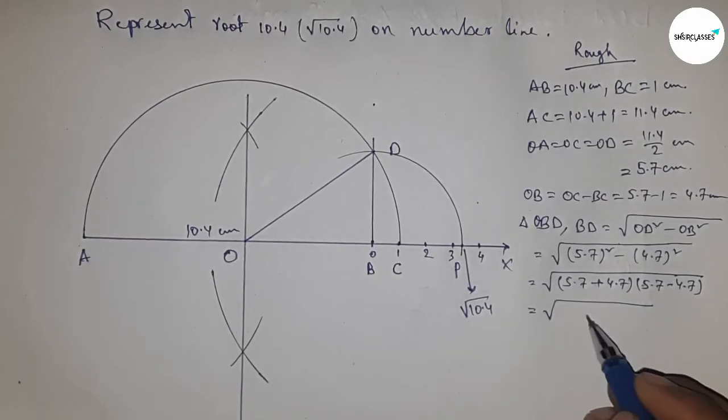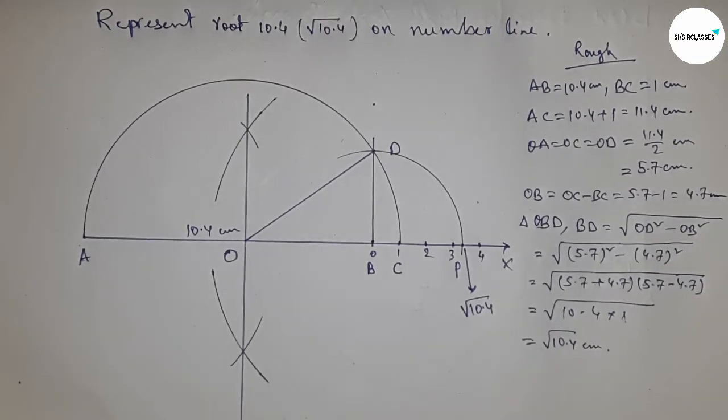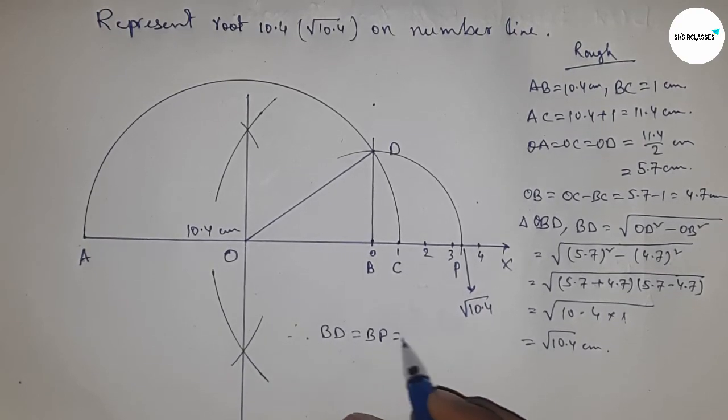This is 10.4 into 1, so this is root 10.4 centimeters. Therefore, distances BD and BP are equal to root 10.4 centimeters.